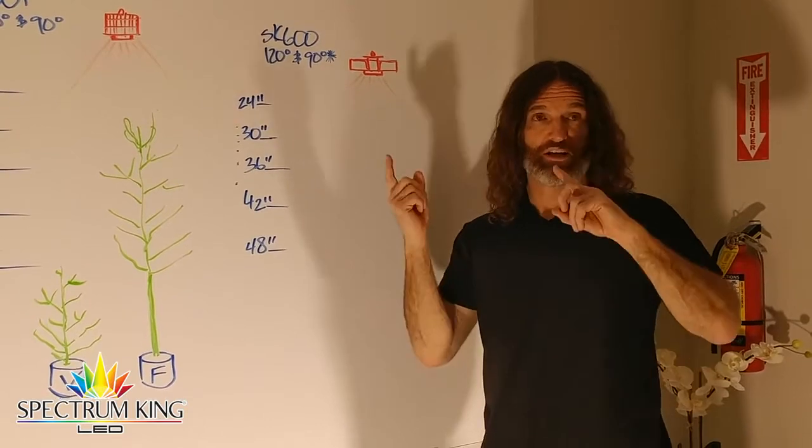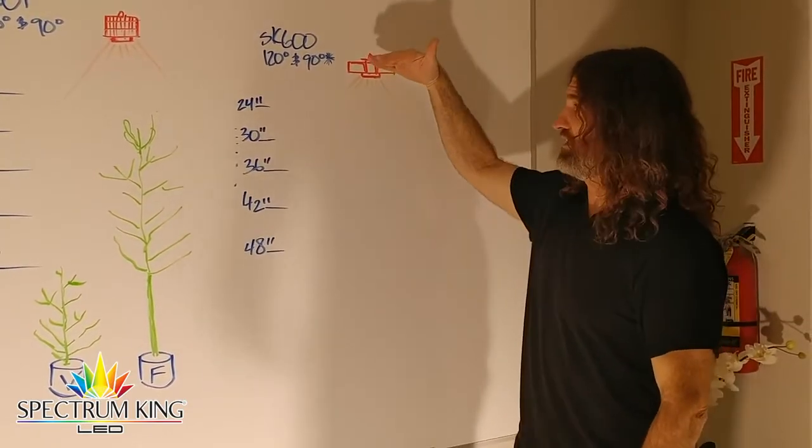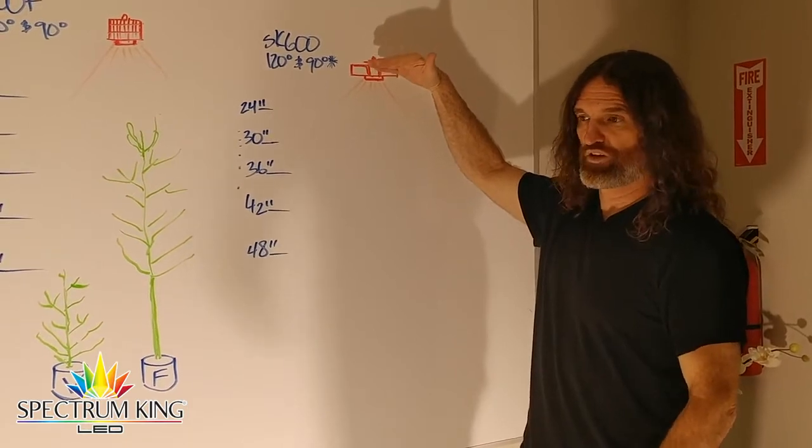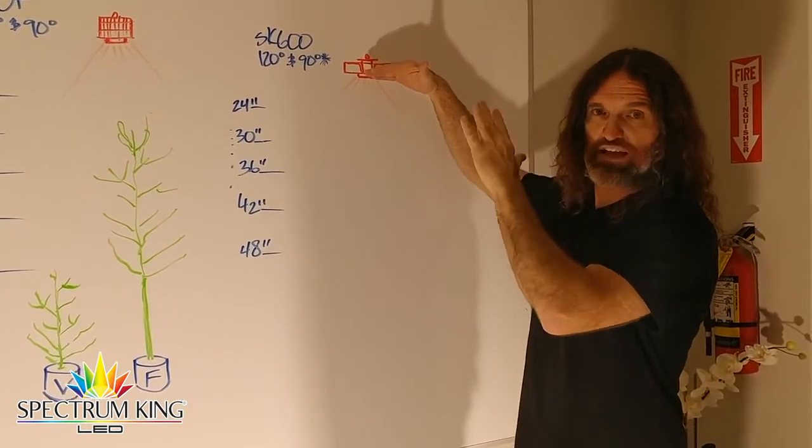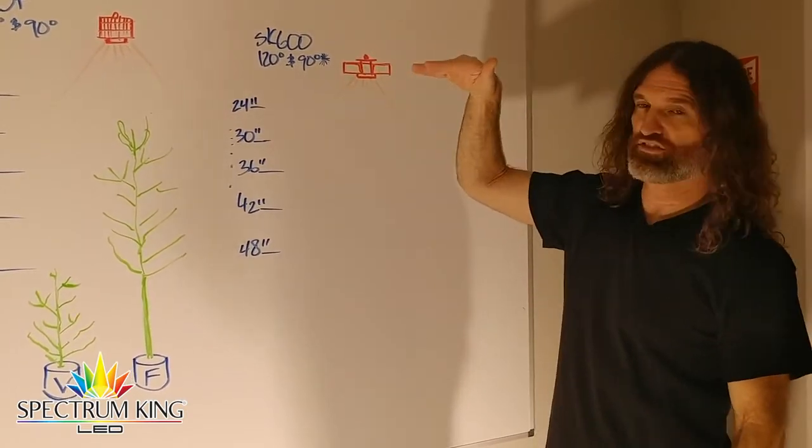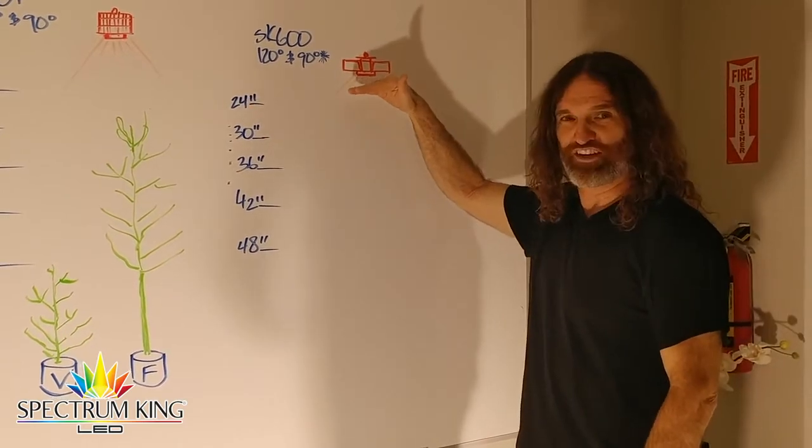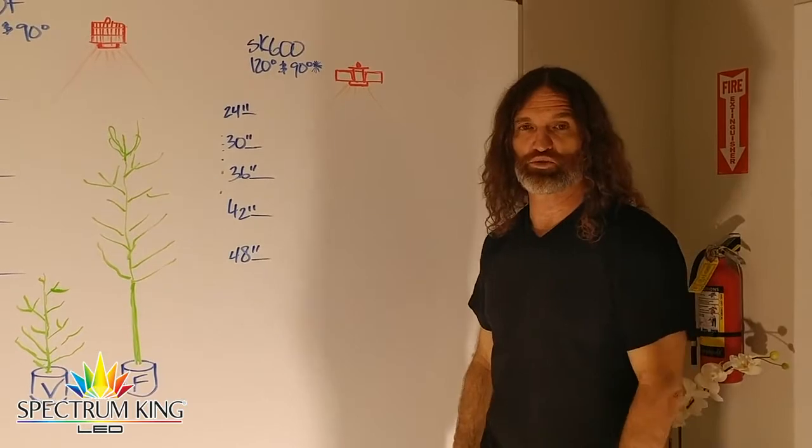A guy called me yesterday about a custom light rail system. He actually has an SK600 that goes through a flower shop nursery door - those plastic flaps you walk through. He has a light rail that pushes the light through a dark flap for 12 hours here, and it goes back through the flap the other side for 12 hours there, so it's on 24 hours a day. Blew my mind, but it was a pretty cool setup.